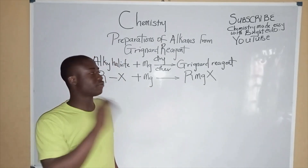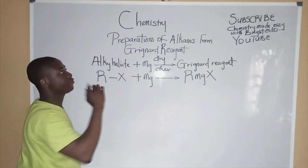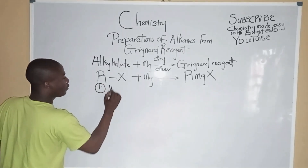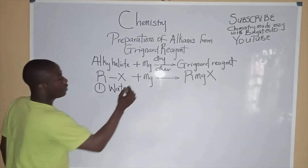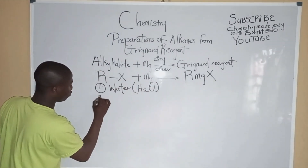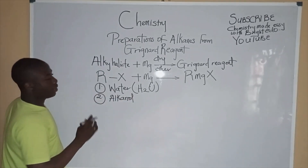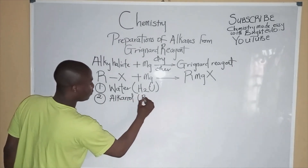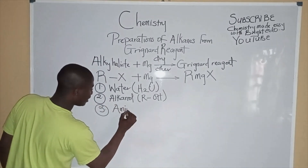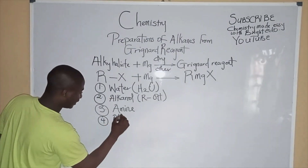How do we prepare alkane from the Grignard Reagent? The Grignard Reagent can be used to prepare alkanes by reacting it with water (H2O), or with alcohol (alkanol), or by reacting it with an alkyl halide.